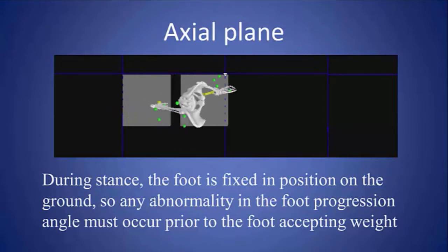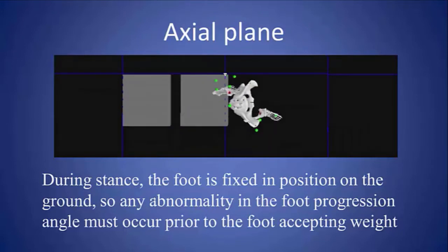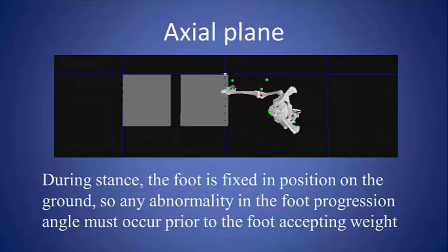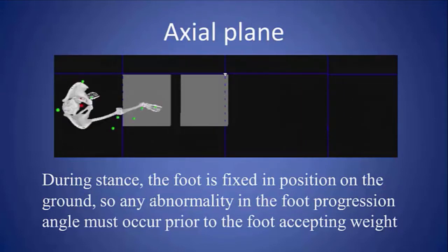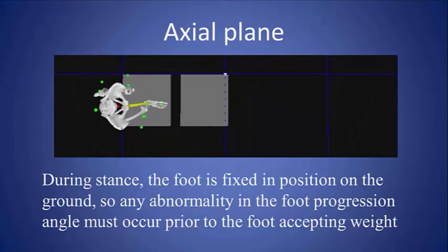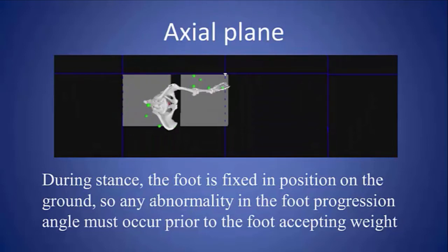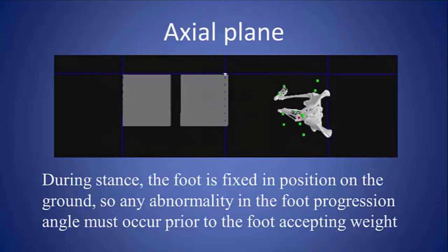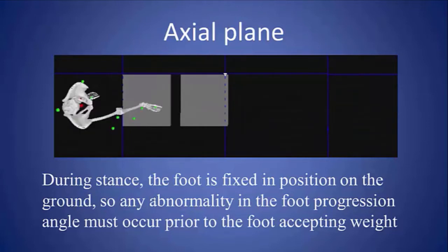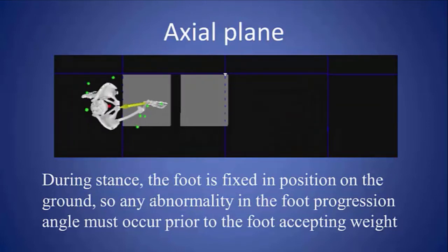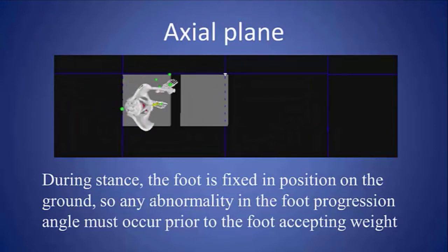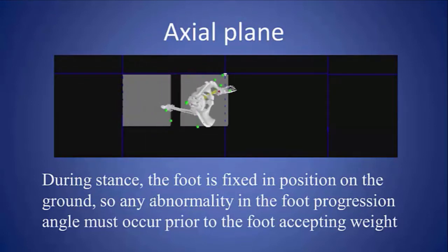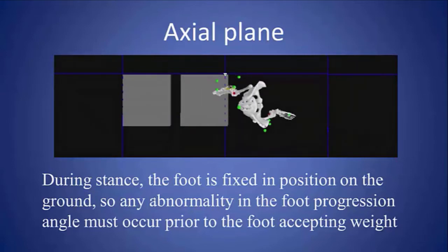In the axial plane you see the movement of the limbs forward in swing phase, and then the stance phase limb becoming relatively extended as the pelvis moves forward on the planted foot — showing this movement of extension of the hip bringing the center of mass forward. The pelvis is relatively quiet, but there is a little motion of the pelvis forward in swing phase to help elongate the step.